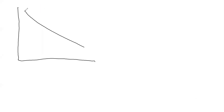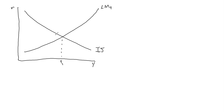We can derive the aggregate demand curve by allowing the price level to change, similar to the way we've derived ISLM. If we allow the price level to increase, that's going to reduce real money balances. It presents itself in the same way that a monetary contraction did — basically the same thing as the money supply falling. And so the LM curve is going to shift upwards to LM2.